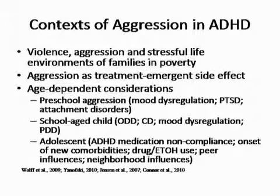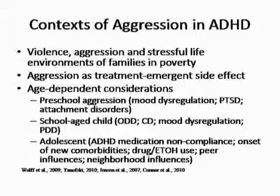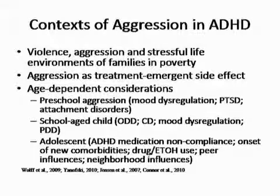With mood dysregulation, PTSD, attachment disorders in older school-aged children, ODD, conduct disorder, mood dysregulation, and PDD — children that might be aggressive because they actually have an underlying PDD etiology — if that's the case, we need to think about that. And in adolescence, the range of contributing factors gets wider yet.